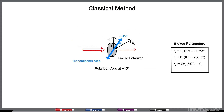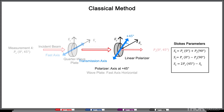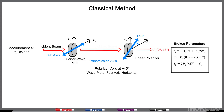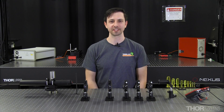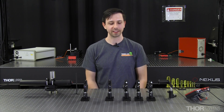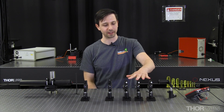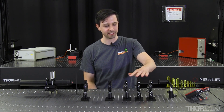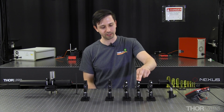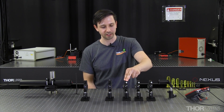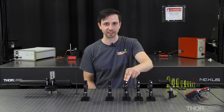To obtain the fourth Stokes parameter, one additional measurement is required. We keep the linear polarizer with its transmission axis at 45 degrees to the horizontal, and we place the quarter wave plate in front of the polarizer in the beam path, with its fast axis aligned along the horizontal. We can then calculate the fourth Stokes parameter from this last equation. Let's now do a measurement using the classical method. I'd like to note that these three linear polarizers have already been aligned with their transmission axes horizontal, vertical, and at plus 45 degrees to the horizontal, using techniques described in some of our previous videos.